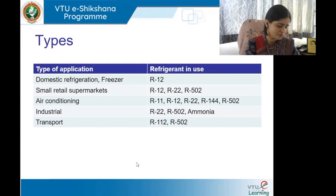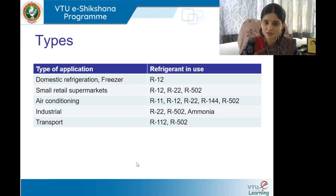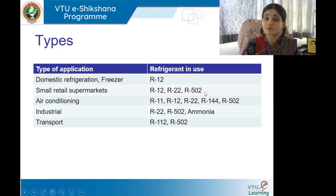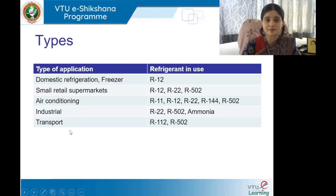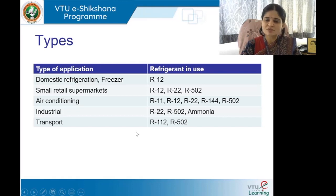A table provides an overview of refrigerants and their applications: R12 is used in domestic refrigeration and freezers; R12, R22, and R502 are used in small retail and supermarket refrigeration; R11, R12, R22, R114, and R502 are used across various scales of air conditioning systems; ammonia is used in industrial processing and refrigeration — though it is confined to industrial use due to its strong odour; and R12 and R502 are used in transport refrigeration.